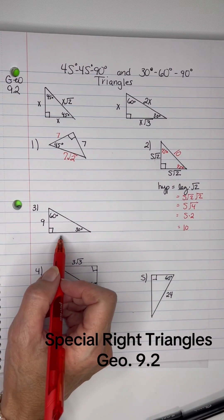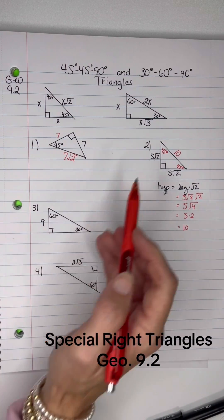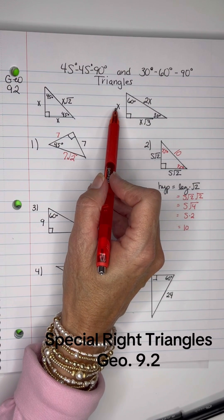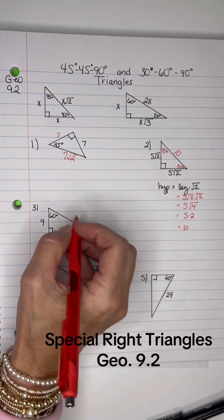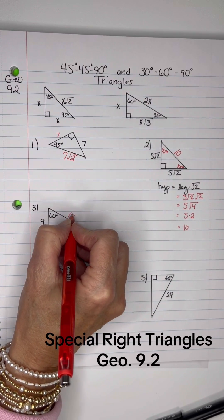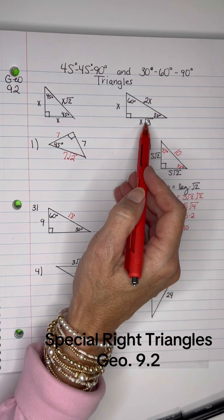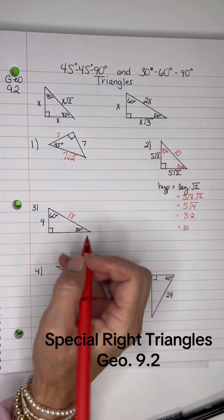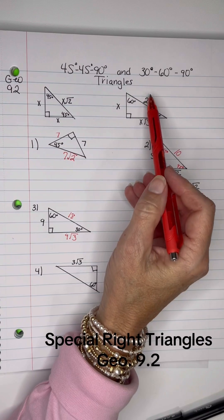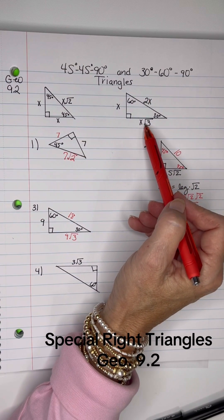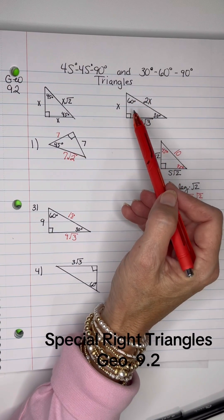On this one, I'm going with a 30-60-90 triangle, and I have the short leg, which is 9. If the short leg is 9, then the hypotenuse is 2 times 9, which is 18. And then your longer leg is the short leg times root 3, so that's 9 root 3. And the song is x, 2x, and x root 3 for the 30, 60, and 90.